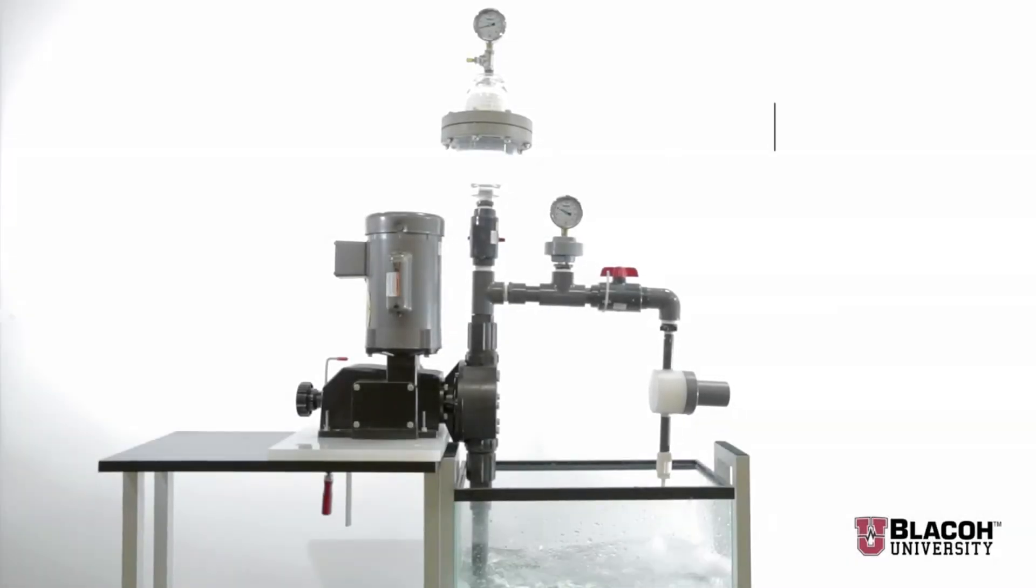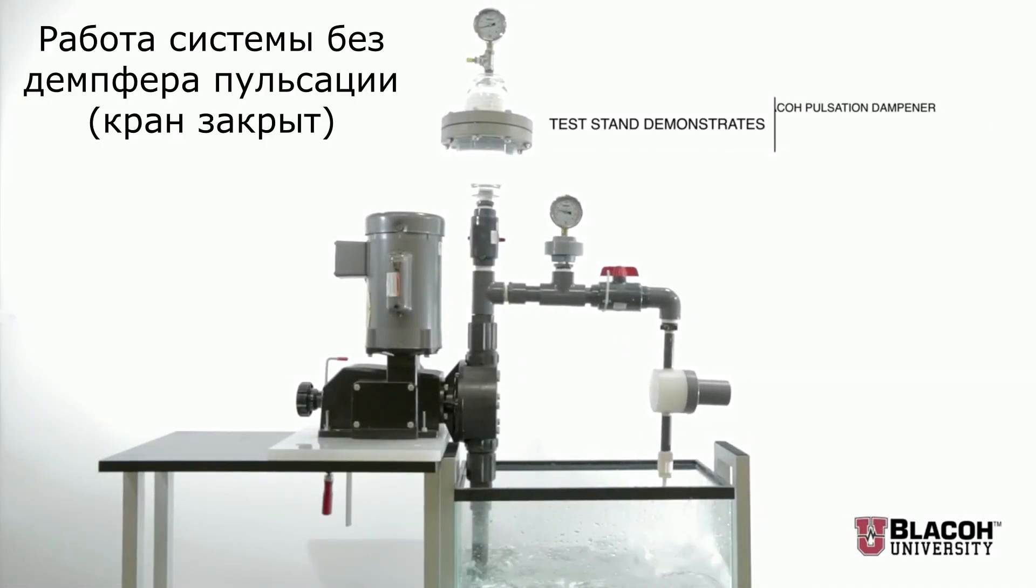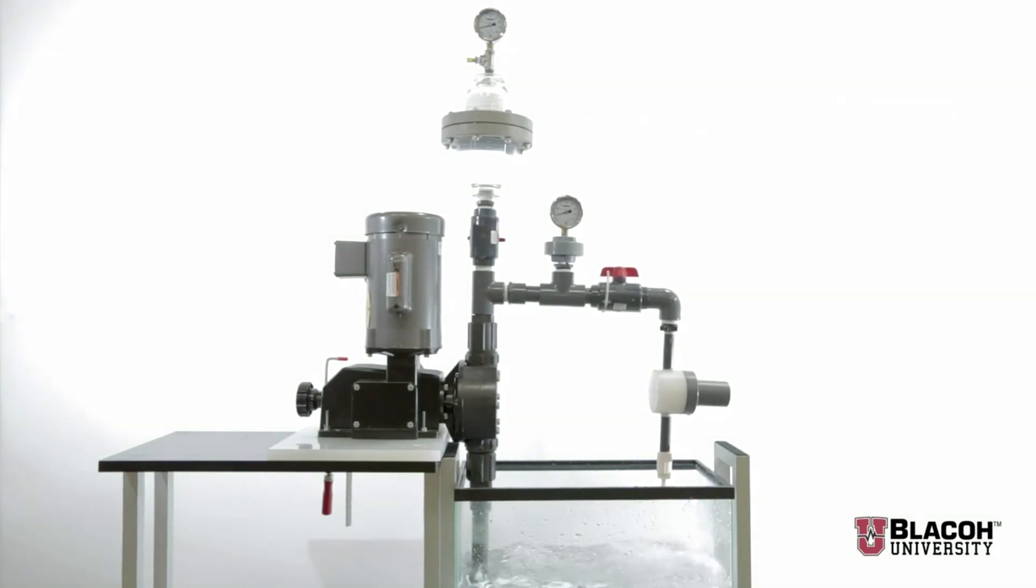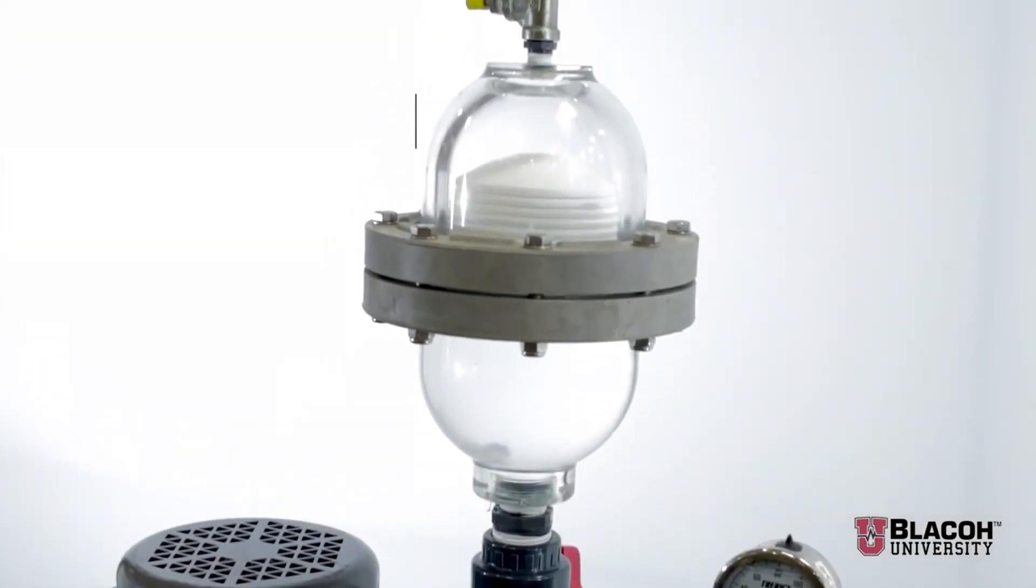This test stand demonstrates the Blayco pulsation dampener with a chargeable air control and a motor driven diaphragm metering pump. The chargeable air control consists of a Schrader type charging valve and a pressure gauge.